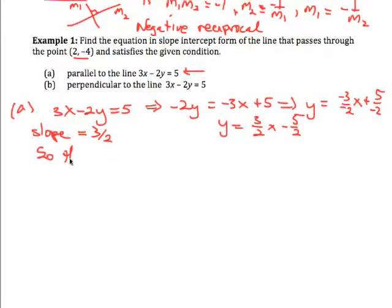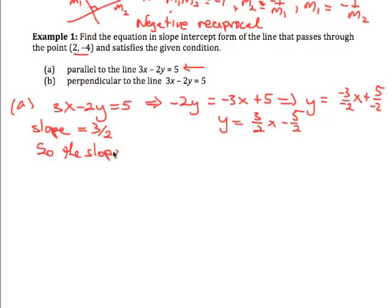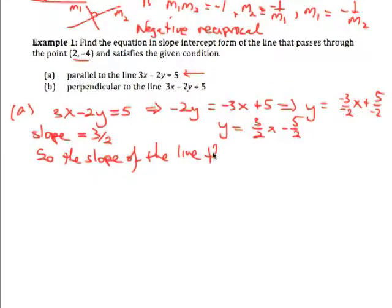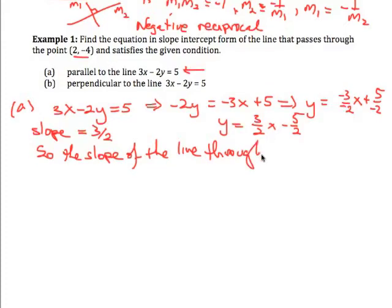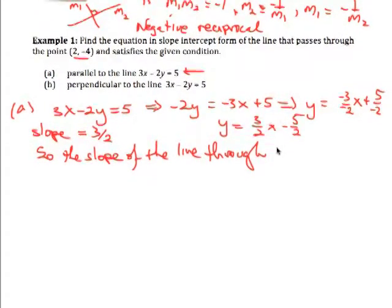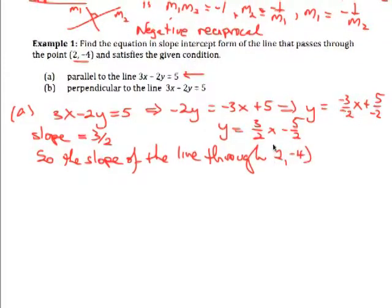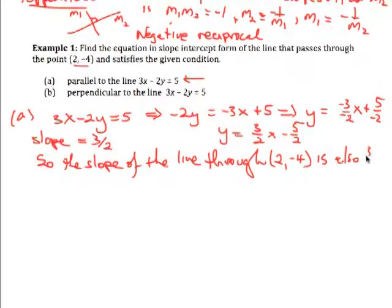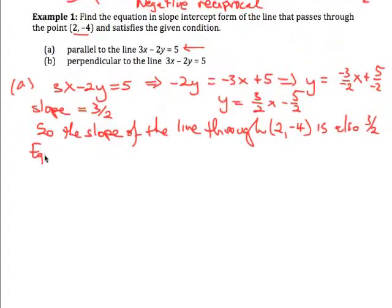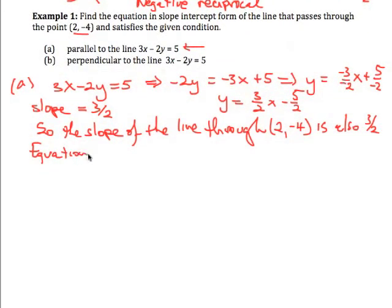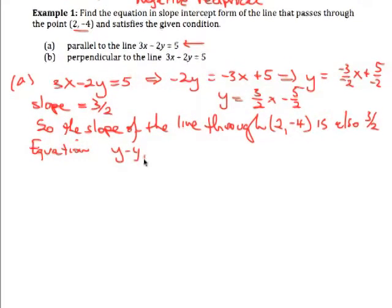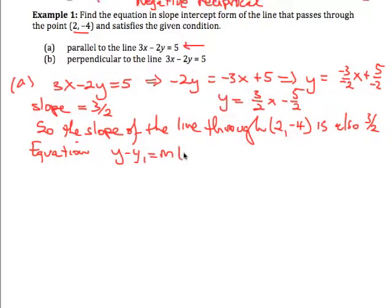So the slope of the line through the point, the point being (2, -4), is also 3/2.